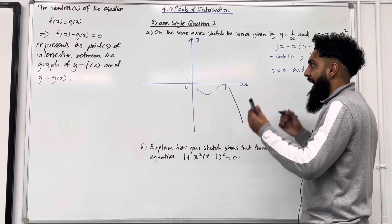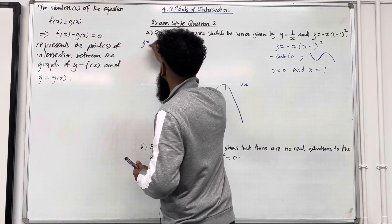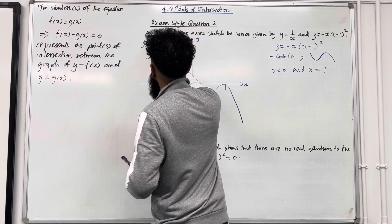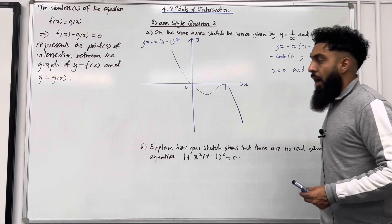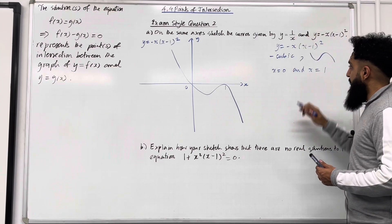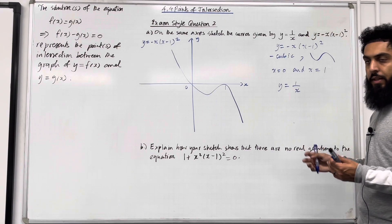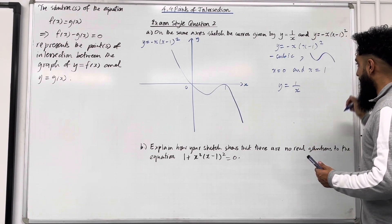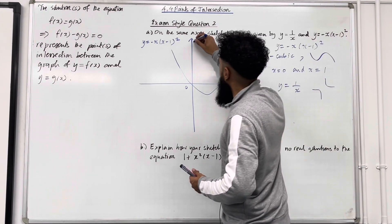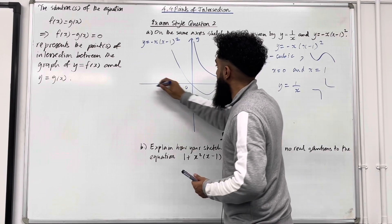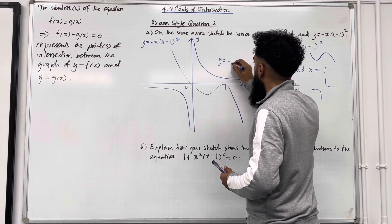To put the icing on the cake, I can label the graph as y = −x(x − 1)². My next graph is y = 1/x. The numerator is a positive constant, hence the reciprocal graph takes the standard positive shape. I've got something like this, and that represents the graph y = 1/x.